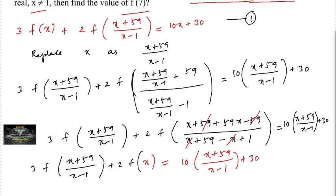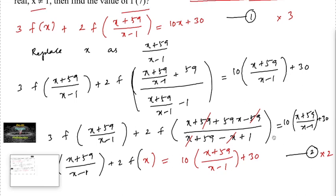So let us take equation 2. Now we solve equations 1 and 2 by eliminating f of (x + 59)/(x − 1). The first equation is to be multiplied by 3 and the second equation by 2, so that we can eliminate the f of (x + 59)/(x − 1) term.